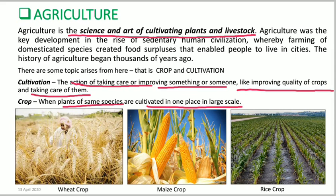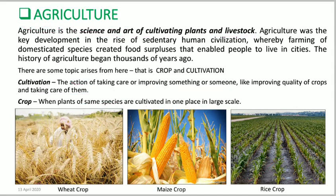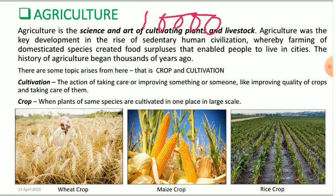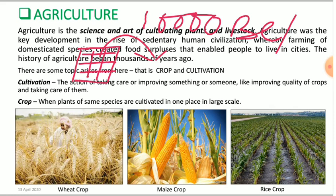Crops are when plants of the same species are cultivated on a large scale in one place. Here we can see pictures of wheat, maize, and rice crops. Now, how did agriculture become part of human civilization? Up to 10,000 BCE, people were nomadic — they used to wander from one place to another. When they settled down at one place, they started cultivating crops to provide food for their civilization. That's how agriculture rose with human civilization.